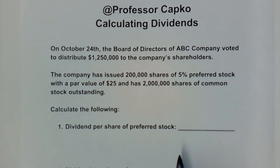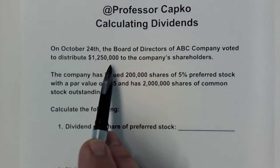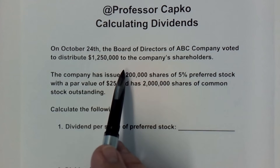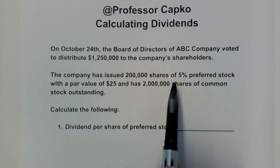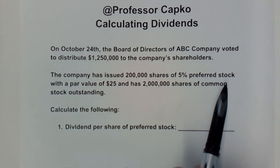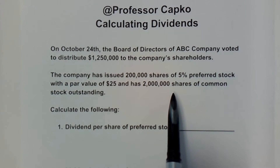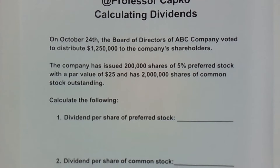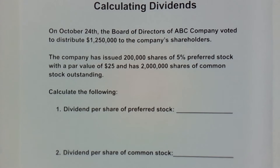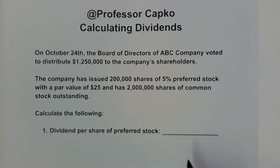In our example here, it tells us that on October 24th, the board of directors for ABC Company voted to distribute $1,250,000 to the company's shareholders. The company has issued 200,000 shares of 5% preferred stock with a par value of $25 and has 2 million shares of common stock outstanding. We're asked to calculate the dividend per share for preferred stock and the dividend per share for common stock.